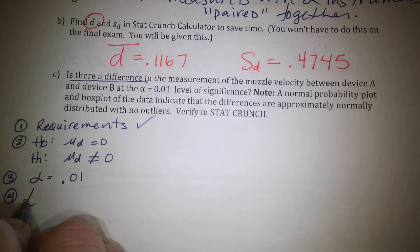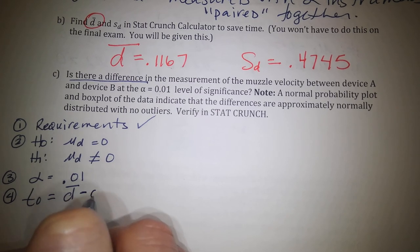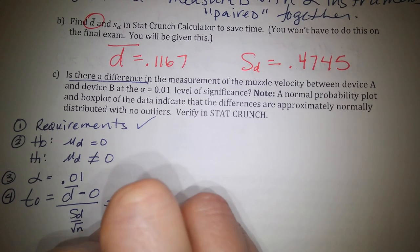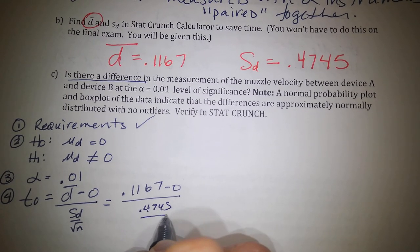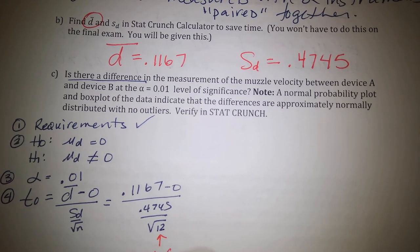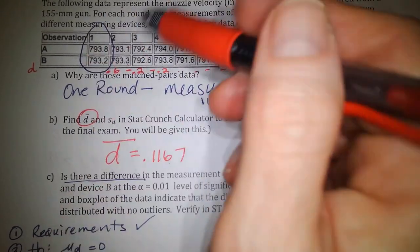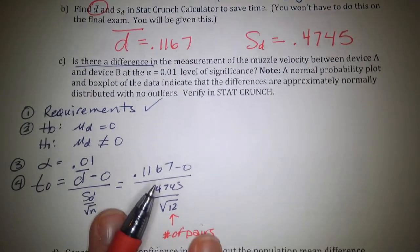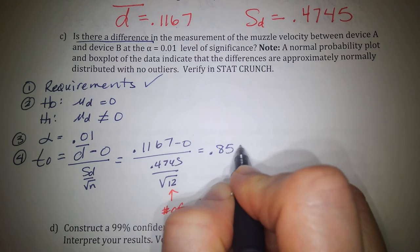Step four: the test statistic is T equals D-bar minus 0 over SD over square root of N. That's 0.1167 minus 0, divided by 0.4745 over square root of 12 — where 12 is the number of pairs. Even though there are 24 data points, N is the number of pairs. When I compute this, I get a T value of 0.852.